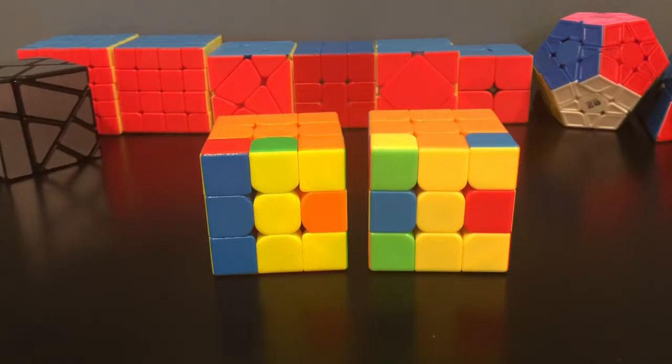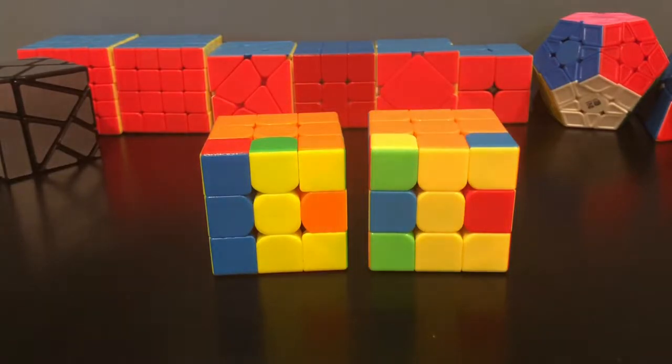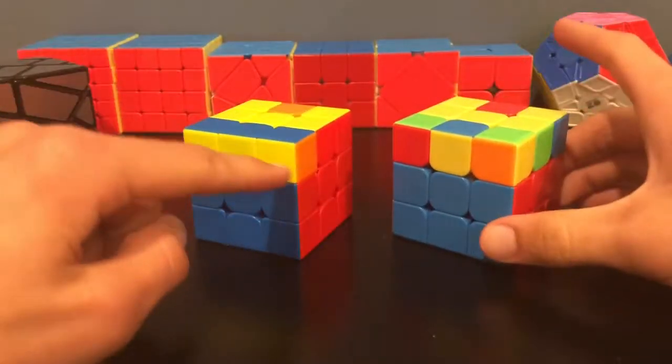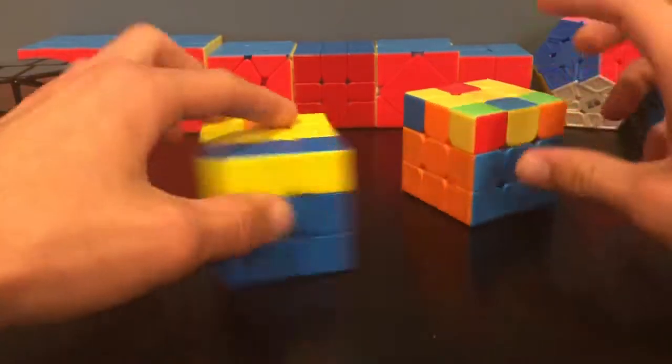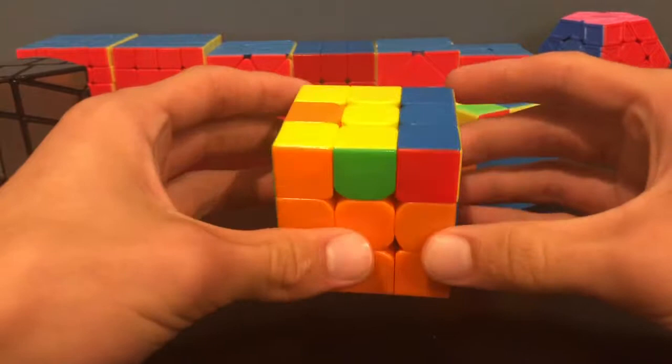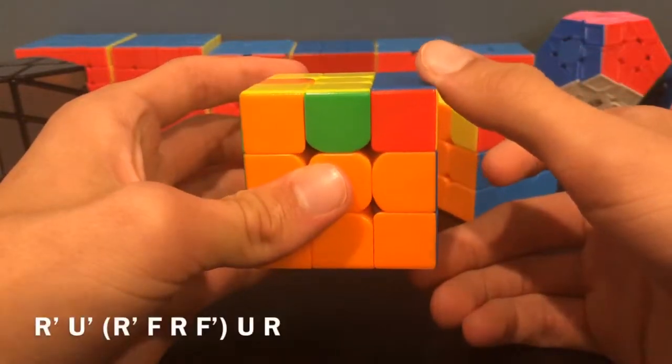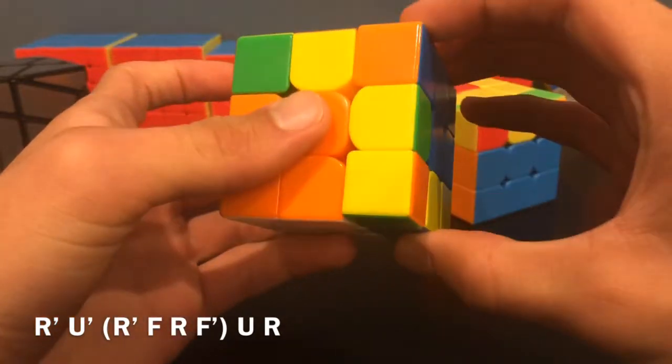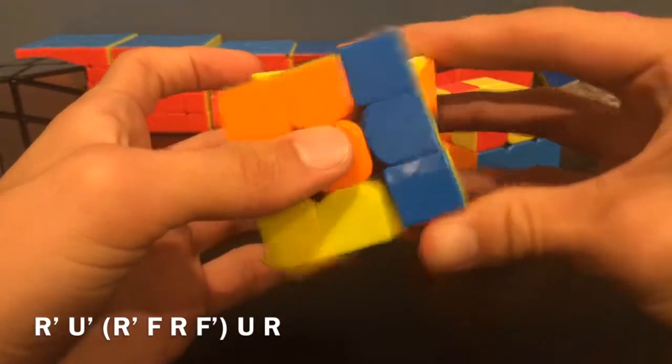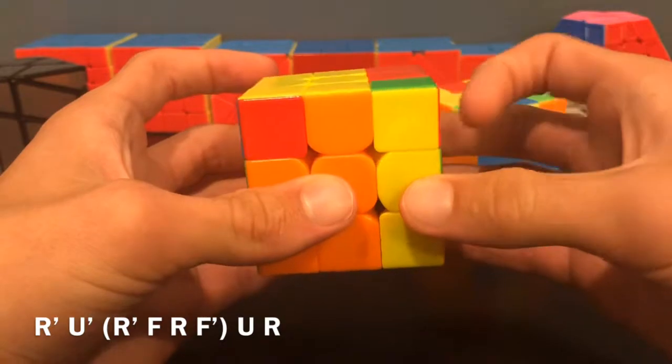Now for the two cases that make a letter C. So notice the difference. This one has a bar of three here, while this one just has two blinkers. So for the bar of three you would hold the cube like this and then do this algorithm: R' U' R' F R F' U R.